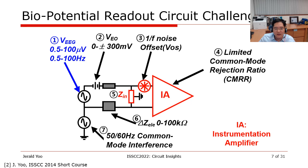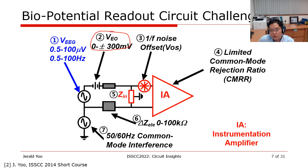This slide summarizes the readout circuit challenges in biopotential amplifiers. First, the signal we are trying to amplify has very weak amplitude — typically for EEG, for example, in the microvolt region. Second, the electrode DC offset, which is the difference in DC level between positive and negative terminals, may reach up to hundreds of millivolts. Third is the 1/f noise, as well as different offsets. Fourth is the limited common mode rejection ratio.